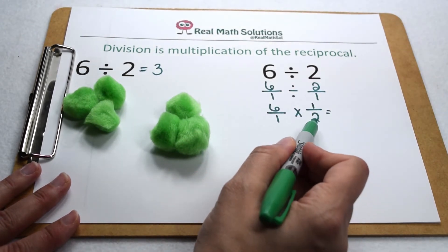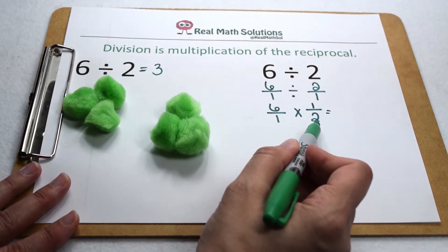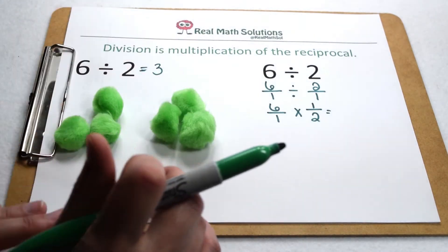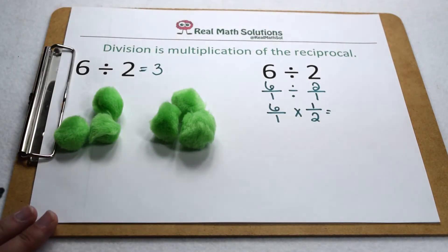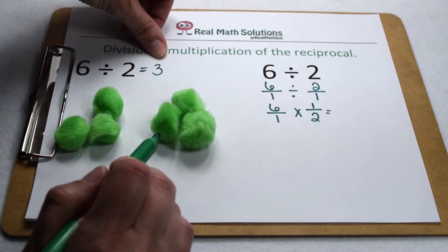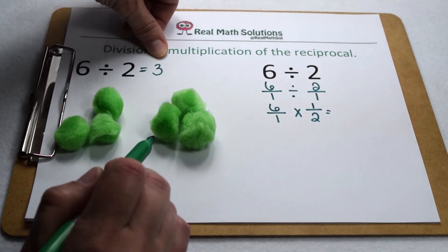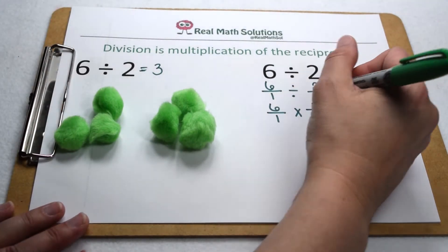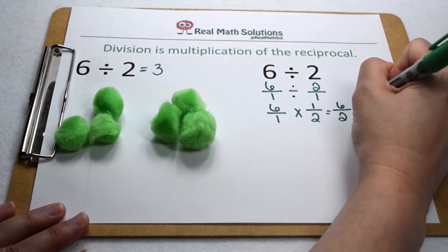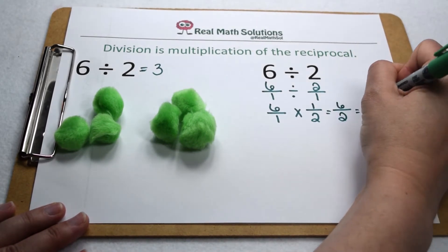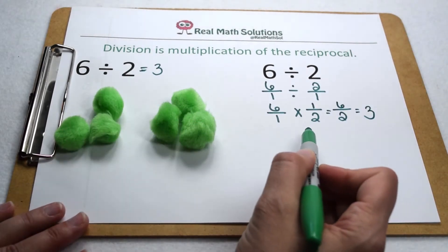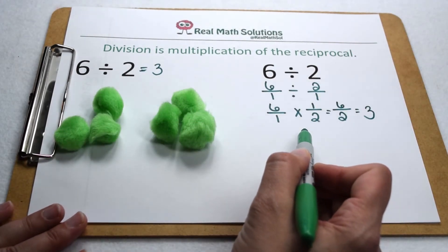That means I need to put half my items into each group. If I have 6 items and I put half of them into each group, that means I have 3 items in each group — the same result. Same thing if we multiply them out: 6 times 1 is 6, 1 times 2 is 2, and 6 over 2 simplifies to 3. So dividing gives us the same result as multiplying by the reciprocal.